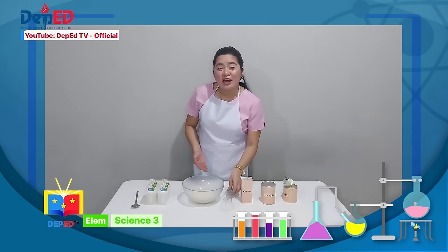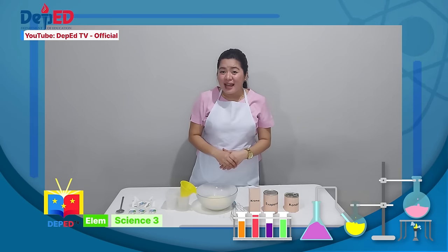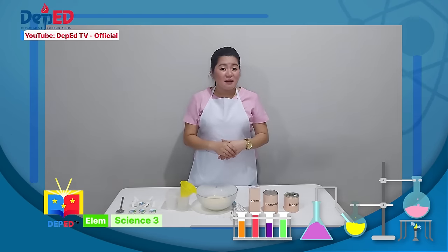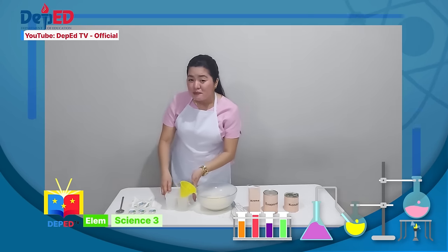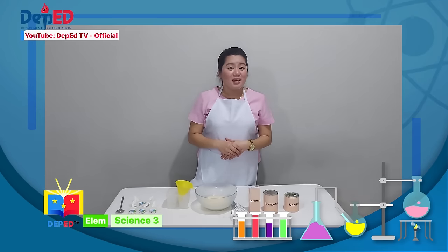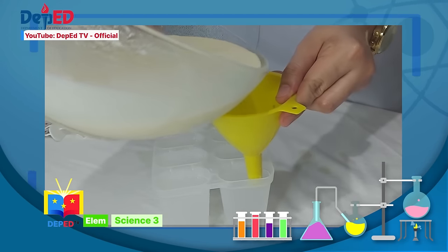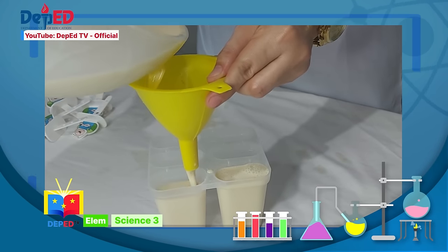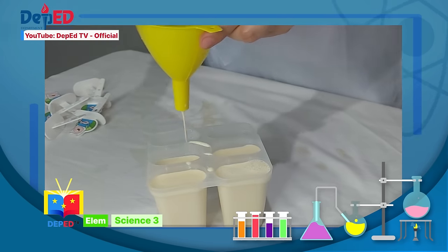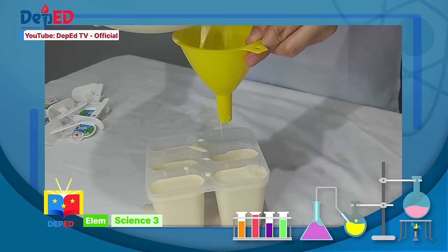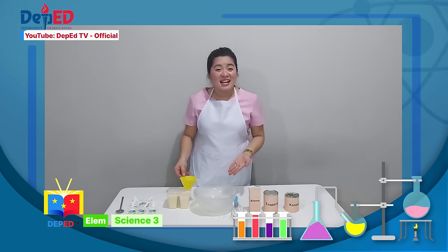Ayan! Handa na! Ngayon naman, isasalin na natin ito sa ating popsicle molder. Paalala lang muli mga bata, kung nais ninyong gumawa ng sarili ninyong popsicle, mainam na magpatulong sa mas nakakatanda, lalo na kapag isasalin na natin ang mga pinaghalong sangkap sa popsicle molder. Kailangan ng ibang tao upang hindi ito magtulo at makapagdulot ng kapanganiban. Ayan! Tapos na! Ngayon, ilagay na natin ito sa freezer!